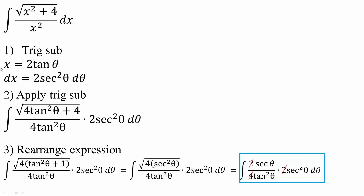If I say that x is equal to 2 tan theta, then dx is equal to 2 secant squared theta d theta. I will apply this into the equation — wherever I see x I go with 2 tan theta, and wherever I see dx I go with 2 secant squared theta d theta.